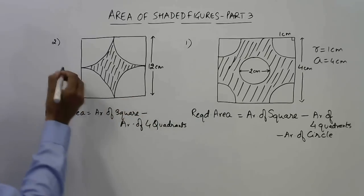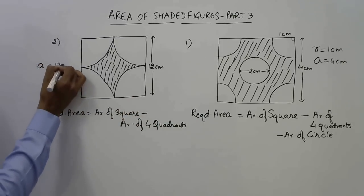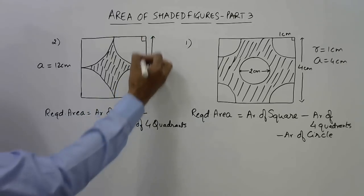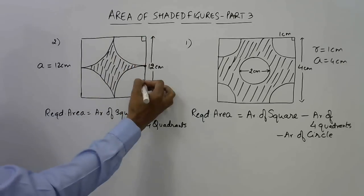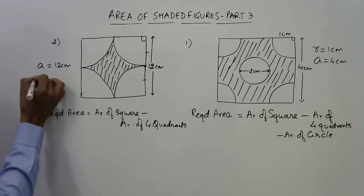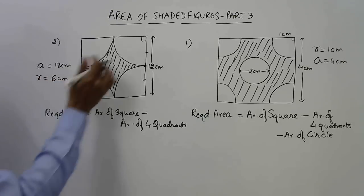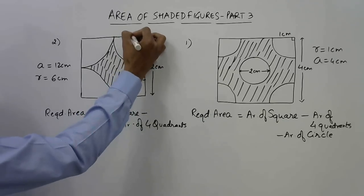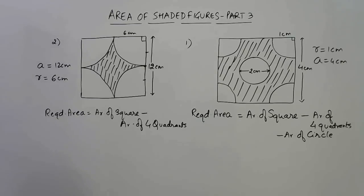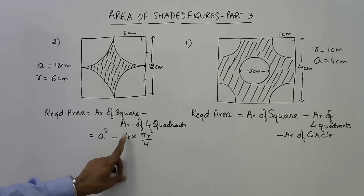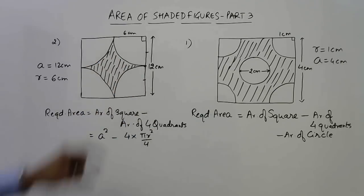The side of the square, that is a, is 12 centimeter. If you notice here, this is the midpoint. These are equal, so this is six, and that is the radius of the quadrant, six centimeter. Now we have the radius and the side of the square. Area of square is a², and area of four quadrants is four times π r² by four. π r² by four is the area of one quadrant, multiplied by four because there are four different quadrants. Four cancels out.